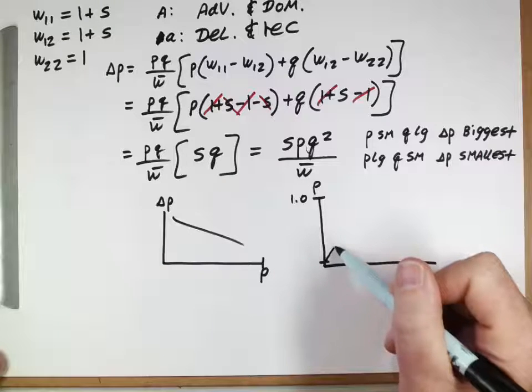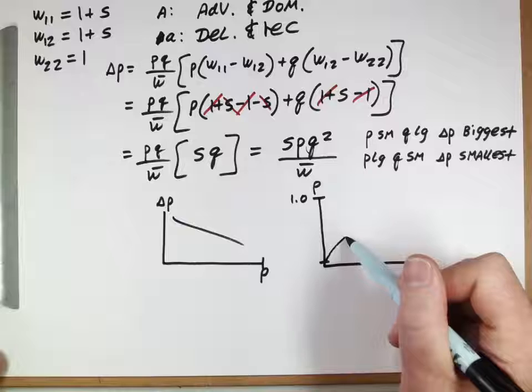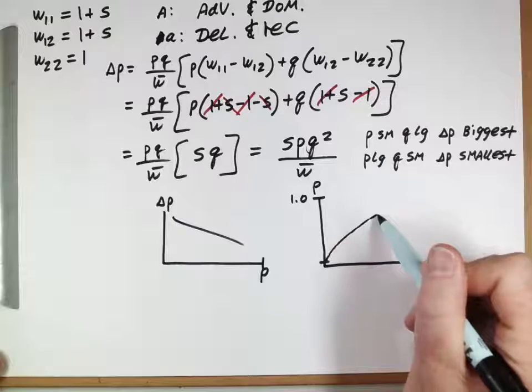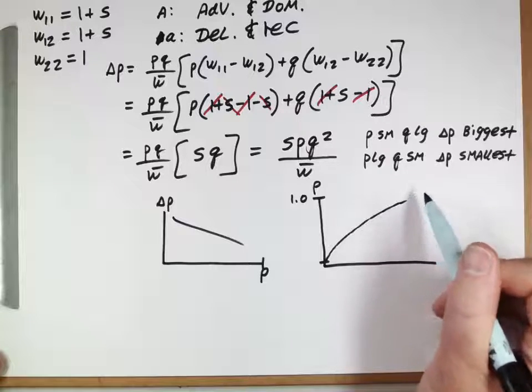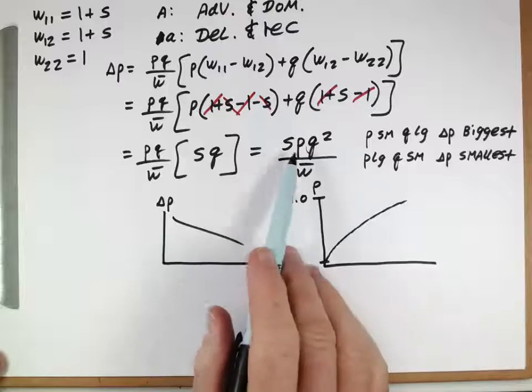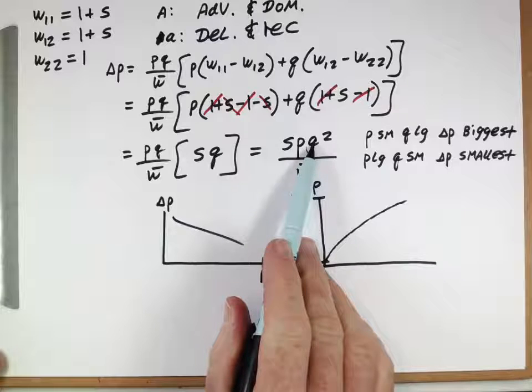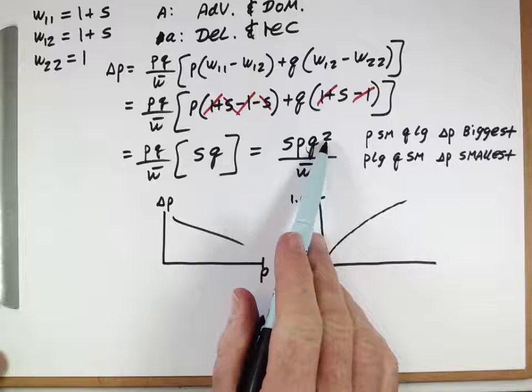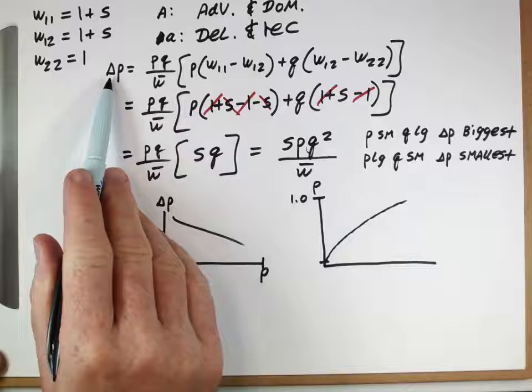As it becomes more common though, it'll get smaller and slower in terms of its increase. And we expect to see something like this. And actually, by the time P gets to be very common, very large, by the time this gets to be almost 1, this is now very small and it's being squared, which is going to result in a very, very small delta P.